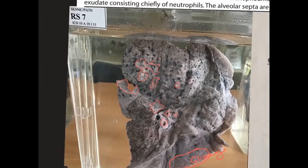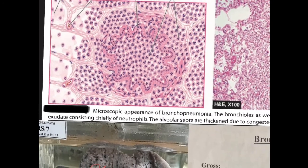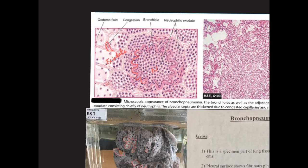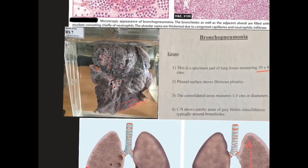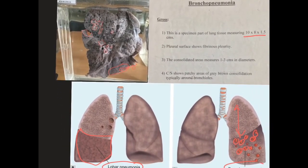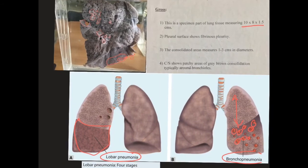Microscopically, in bronchopneumonia the bronchioles are filled with neutrophils, surrounding capillaries are dilated, and the alveoli are filled with exudates. To summarize the gross: the lung tissue measures 10 × 8 × 1.5 cm, the pleura shows fibrinous pleurisy, and the cut surface shows patchy gray-brown consolidation areas.